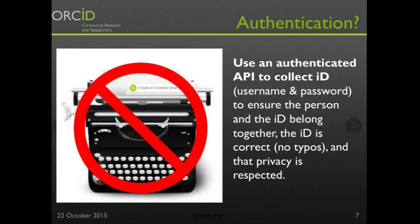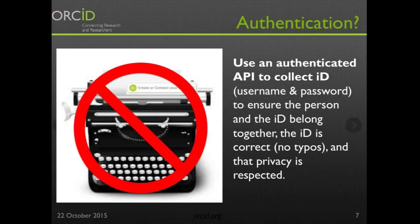This is my favorite slide and it seems to have had a lot of resonance here in Brisbane. To use identifiers effectively, we have to get away from the notion that somebody can type an identifier into a form field. For identifiers to be effective, we really need to move towards a model where people collect these identifiers using authentication — an OAuth pathway — using that person's username and password into ORCID. This ensures the person and identifier belong together, eliminates typographical errors, and during that process the individual can explicitly approve use of their identifier data within that system. It's a really good way to work within privacy mandates.